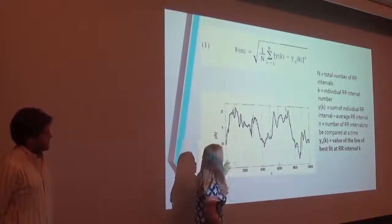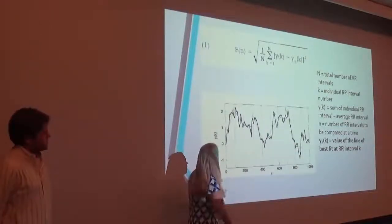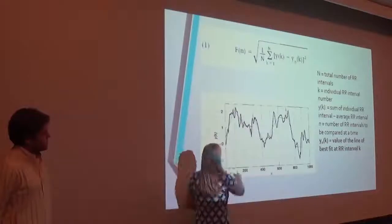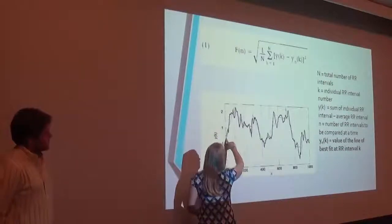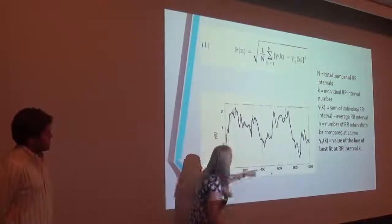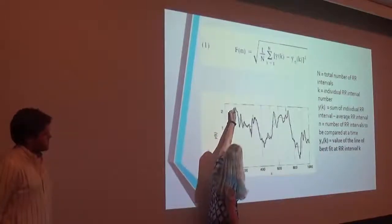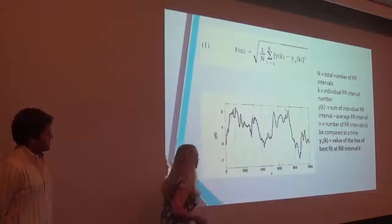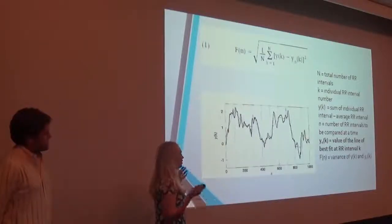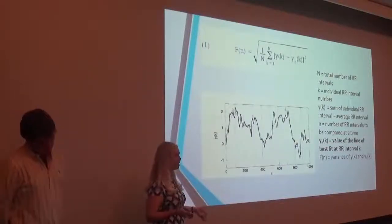So if you were at like 50, it would be the sum over 50 heartbeats. And so you're doing the line of best fit from that k to that y of k, which is this line right here. And that y sub n k is the value at each k value. So at 100 it would be around 2 up here. So then the f of n is actually the variance between y k and y sub n k.